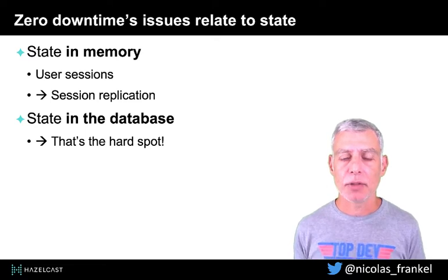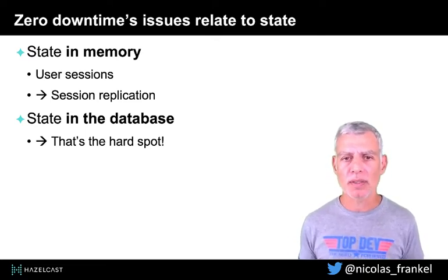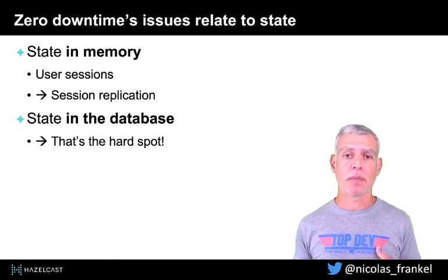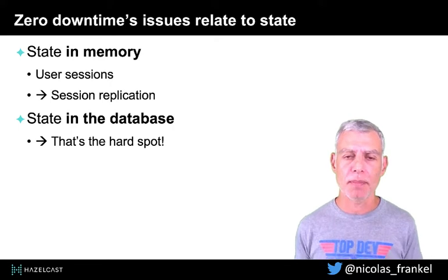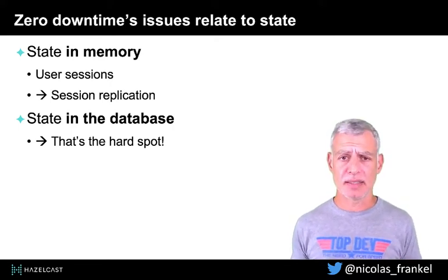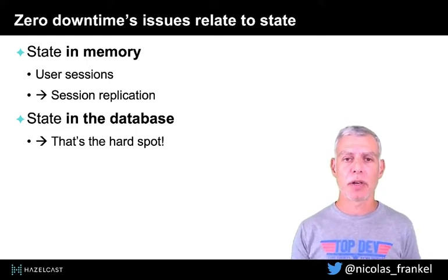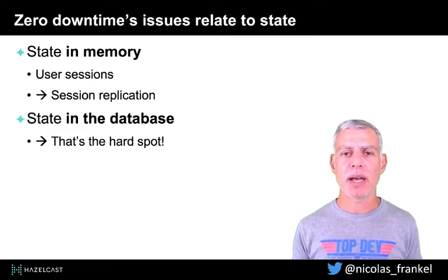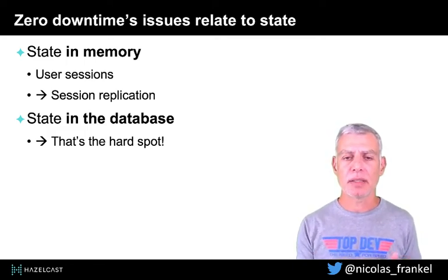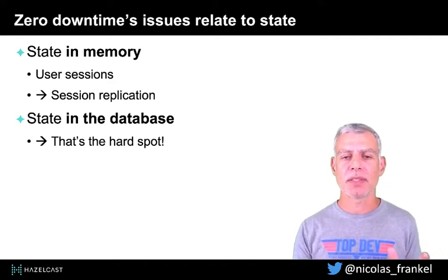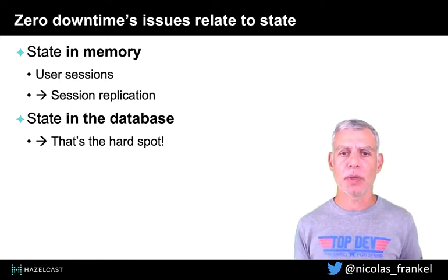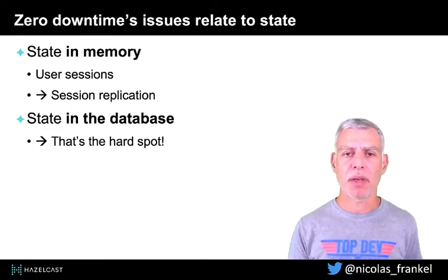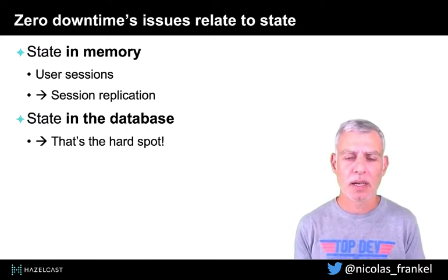The biggest problem is state, and you have different kinds of states. In general, the main ones are sessions and databases. I believe the state in sessions has been solved already for a long time through session replication. When you've got a load balancer with several nodes and one might fail, even with session affinity, you want your users to keep the state of their carts. For that reason, we invented session replication — whenever you do a change in a user's session, it's replicated throughout all nodes.